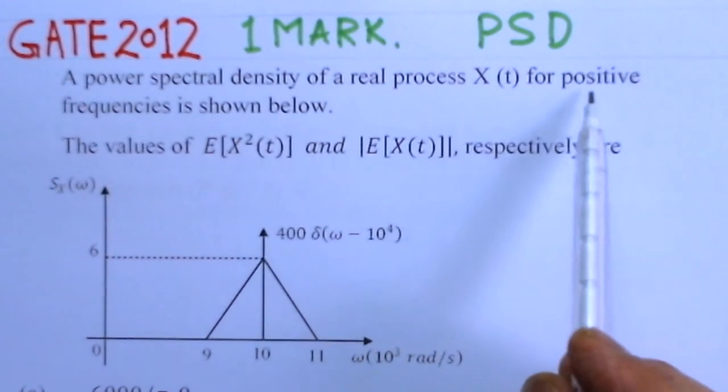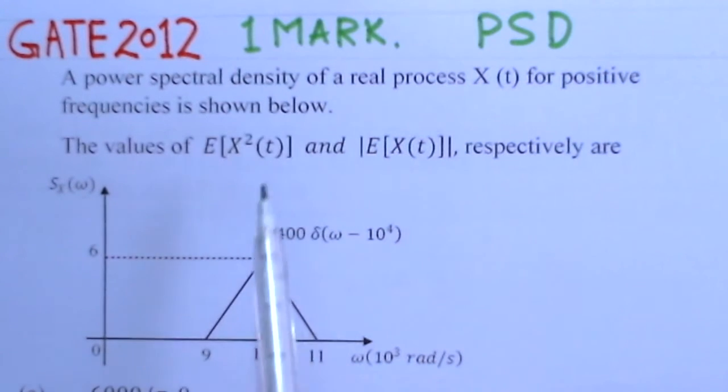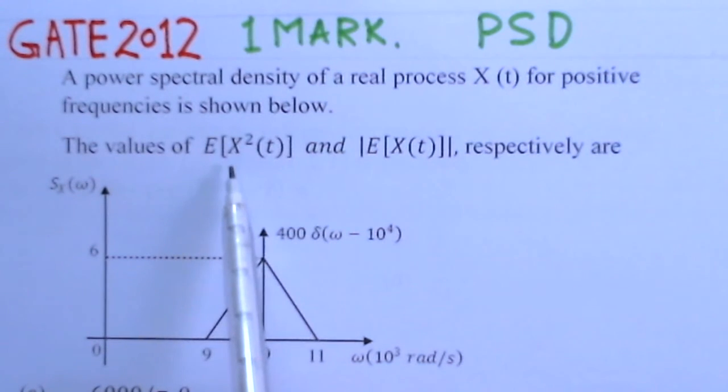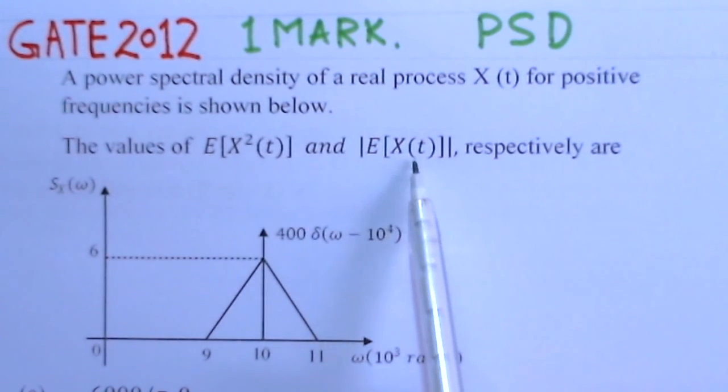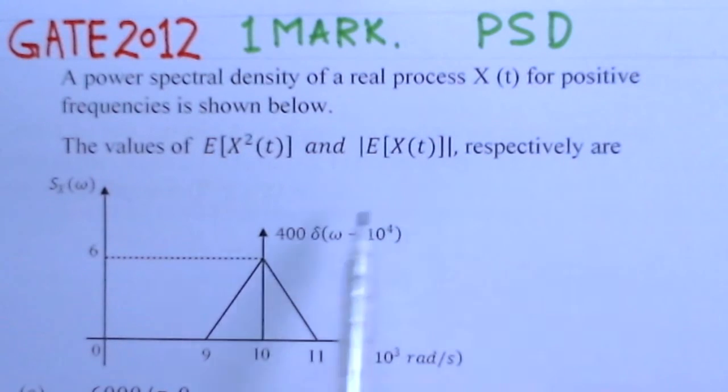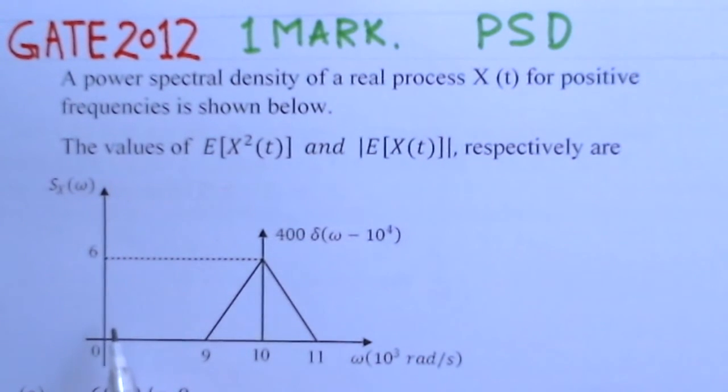A power spectral density of a real process X(t) for positive frequencies is shown here. The value of E[X²(t)] and the magnitude of the expected value |E[X(t)]| are to be determined.